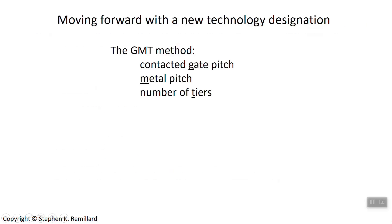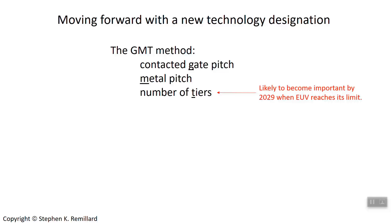Since technology node is no longer a good description, engineers are working on better ways of describing it. One proposal is the GMT method: rather than giving a single number like 5 nanometers, three numbers are given — one describing the gate, one describing the metal pitch, and one describing the number of tiers.